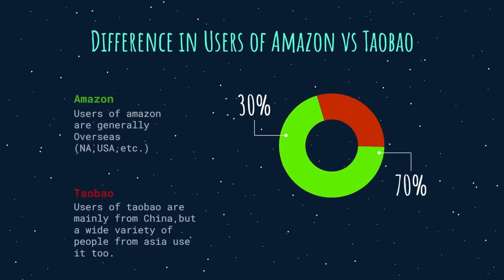Comparing the user bases of Taobao and Amazon: Amazon started around 1995 as an online bookstore, and Taobao started around 1999. Amazon had a head start and is still more dominant. Amazon users are generally from the United States and North America, while Taobao users are generally from China or Asia. The comparison shows a roughly 70 to 30 percent ratio in favor of Amazon.